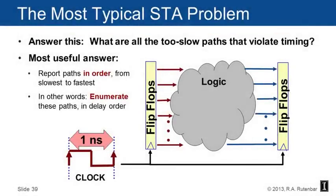The most typical static timing analysis problem: you give the tool your logic, tell it your clock period — say one nanosecond, a gigahertz clock — and ask what are all the too-slow paths that violate timing. The most useful answer reports those paths in order from the slowest to the fastest, enumerating them in delay order.